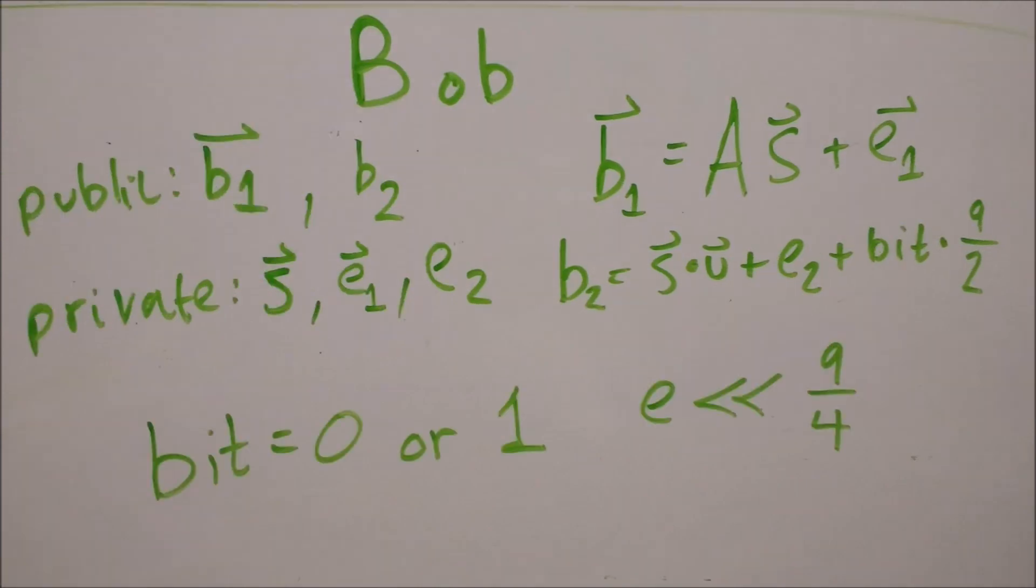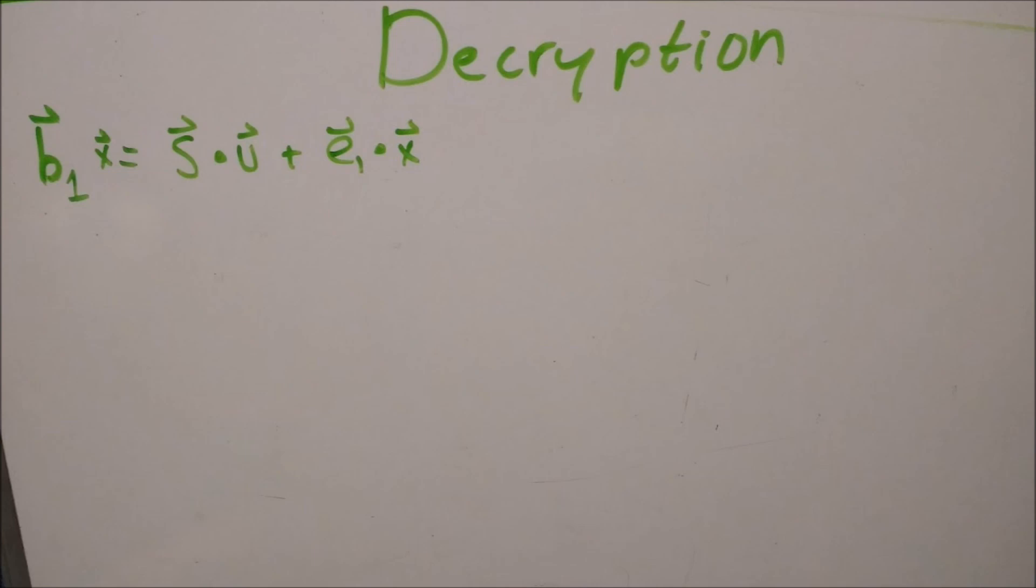In general, error is much less than q over 4. So that was a lot of details to make the equations precise, but here is the interesting part we should really take away.